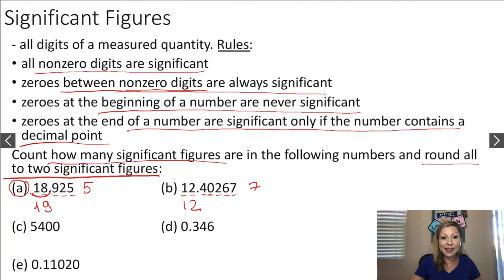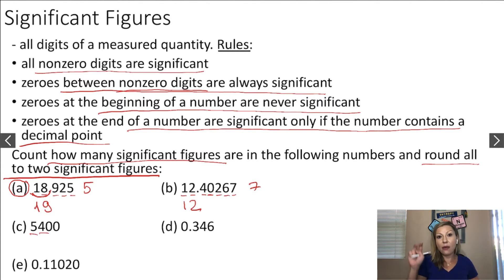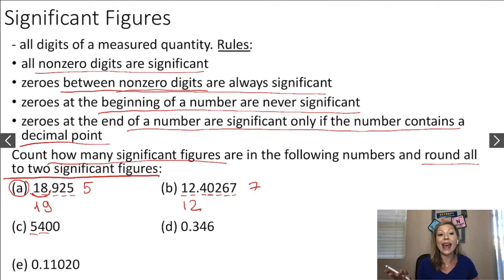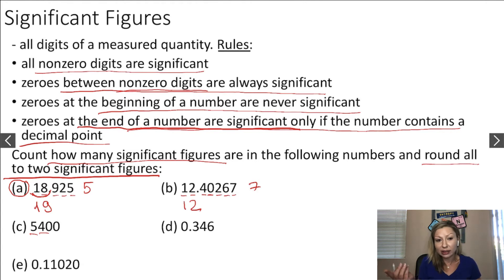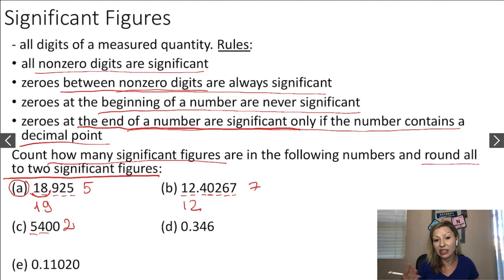Let's look at example C. We have 1 and 2 as non-zero digits, and then two zeros at the end. The rule says zeros at the end of a number are significant only if the number contains a decimal point. There is no decimal point here, so we already have just two significant figures in 5,400, and we do not need to round it.